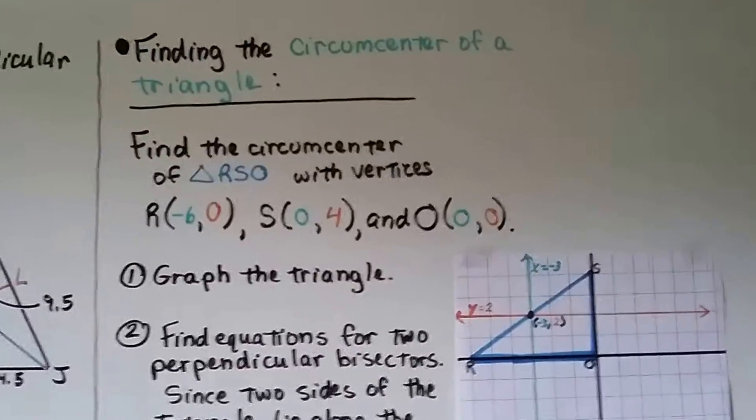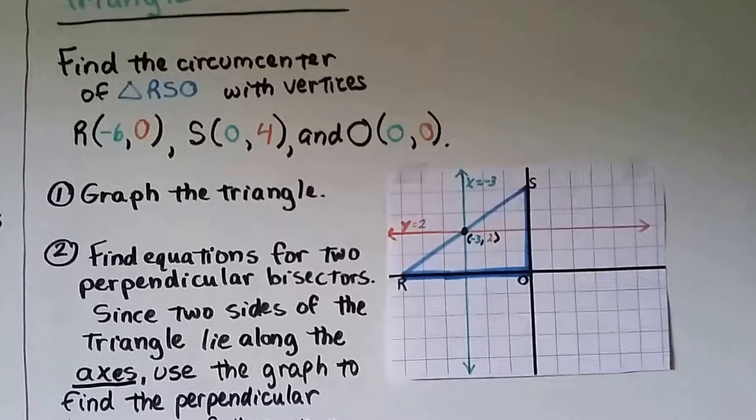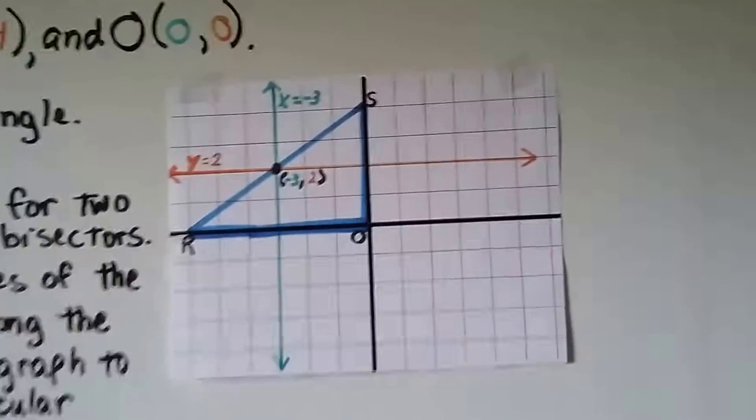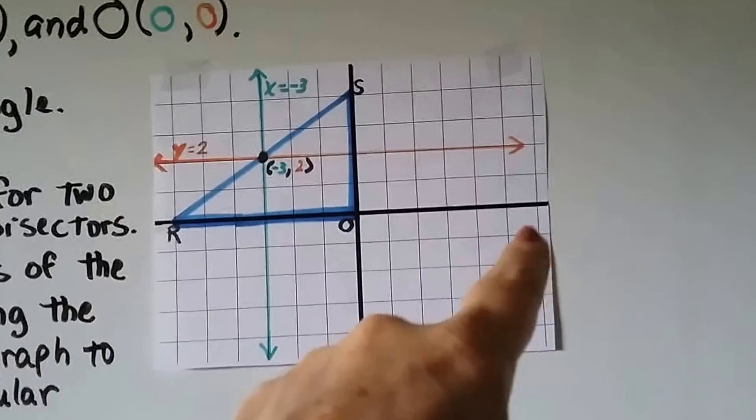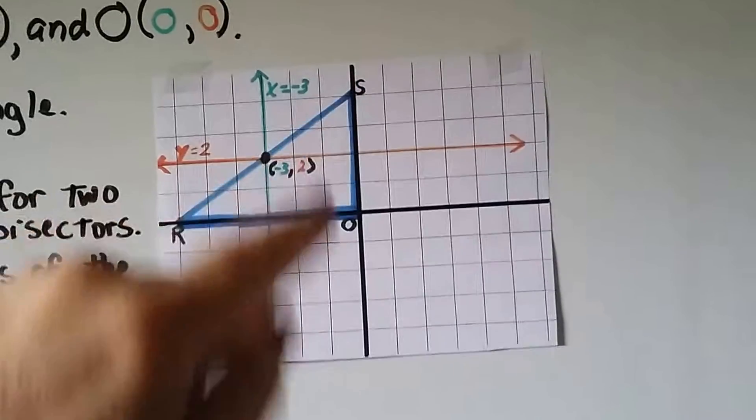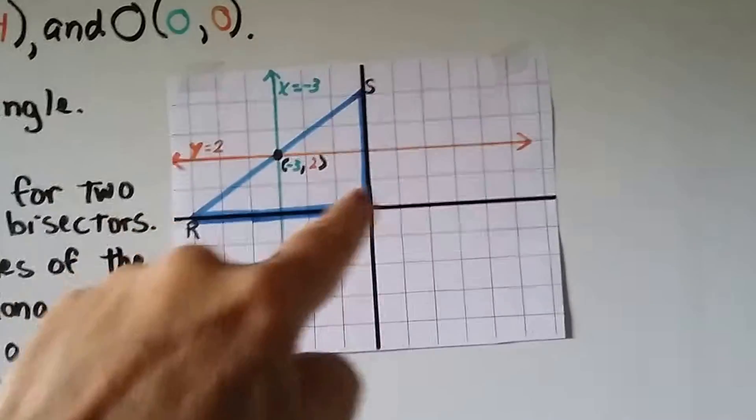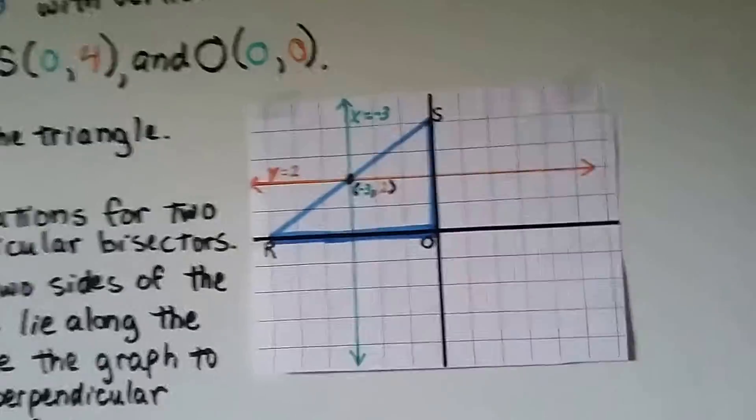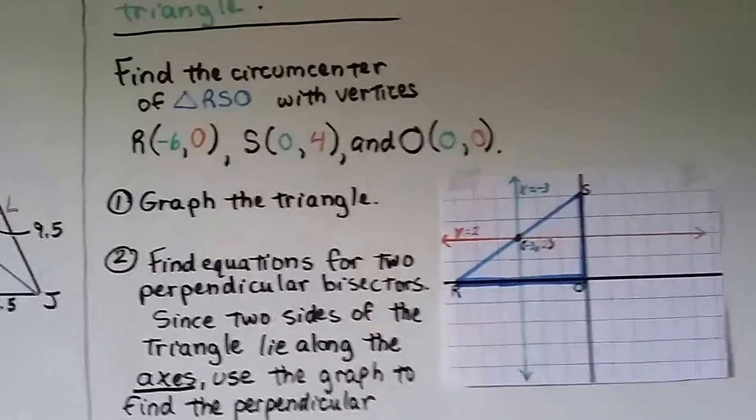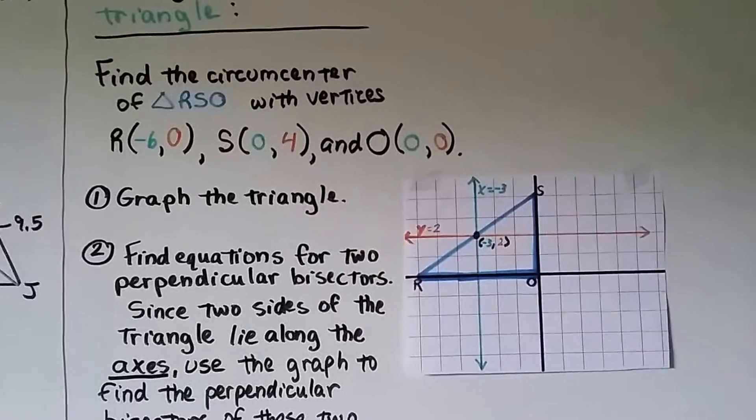Finding the circumcenter of a triangle. We've got our y-axis and our x-axis, and we've got this triangle RSO. It's a right triangle in the second quadrant. Find the circumcenter of triangle RSO with vertices R at negative 6, 0, S at 0, 4, and O at the origin, 0, 0.